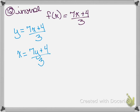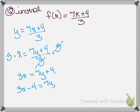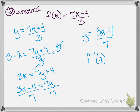Now I solve for y. First I multiply both sides by 3 — those threes cancel — so I'm left with 3x equals 7y plus 4. Then I subtract 4 from both sides: 3x minus 4 equals 7y. I divide both sides by 7 and I'm left with y equals 3x minus 4 over 7. My final step is to replace y with f inverse of x — that is my final answer.